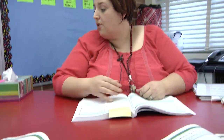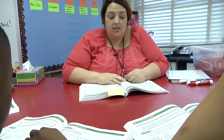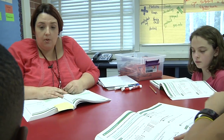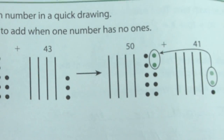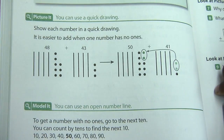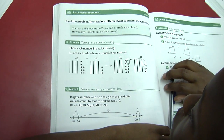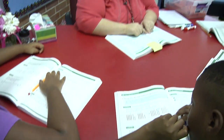So the first thing we're going to do is read the problem as a group — the problem in the green box. There are 48 students on bus A and 43 students on bus B. How many students are on both buses? Okay, so we're adding two-digit numbers again. Now, we don't always have base 10 blocks, so an easy way is that we can draw a picture — but do I have to draw every square of that base 10 block? No. I have lines and dots — that works just as well. I have tens and I have singles, so it works the same way.